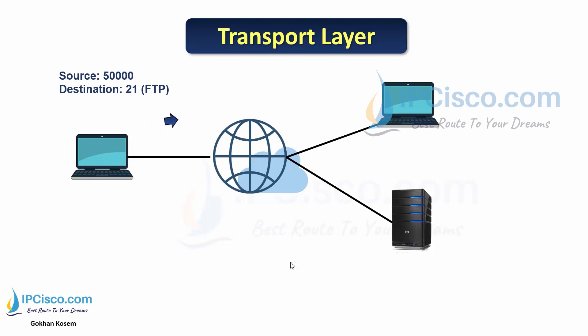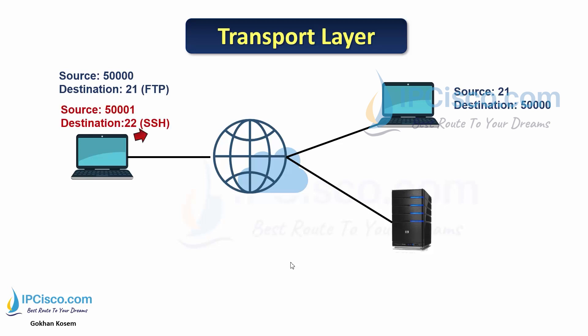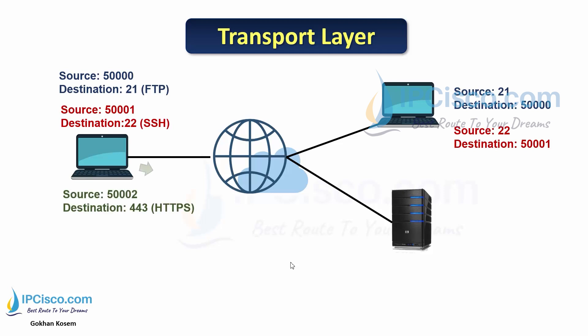For example, think about this: you are sending data from one PC to another PC with FTP. You have one source port and one destination port. The source is a random port and the destination port is the FTP port. Or if you use SSH, your source port will be a random port and the destination port will be the SSH port. This mechanism works for other application layer protocols also.